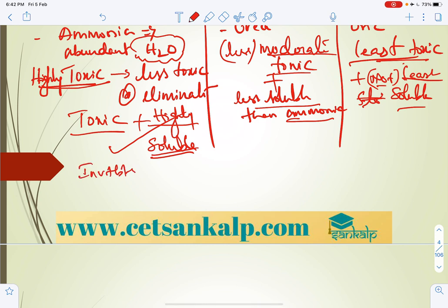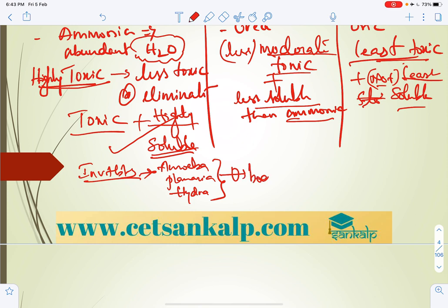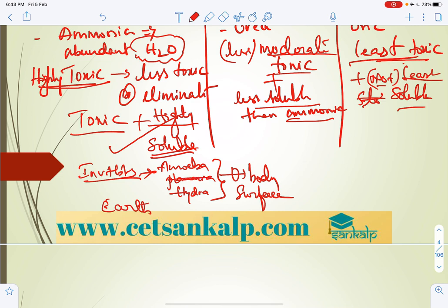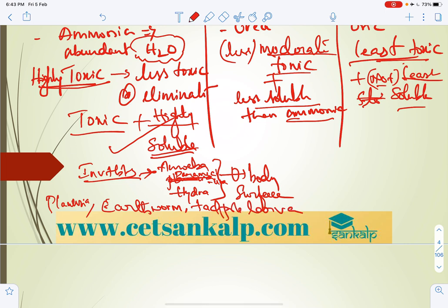Almost all invertebrates — including Amoeba, Planaria, and Hydra — eliminate waste through their body surface with no well-developed excretory organ. Paramecium, Planaria (a flatworm), earthworm, and tadpole larva of amphibians eliminate nitrogenous waste as ammonia.